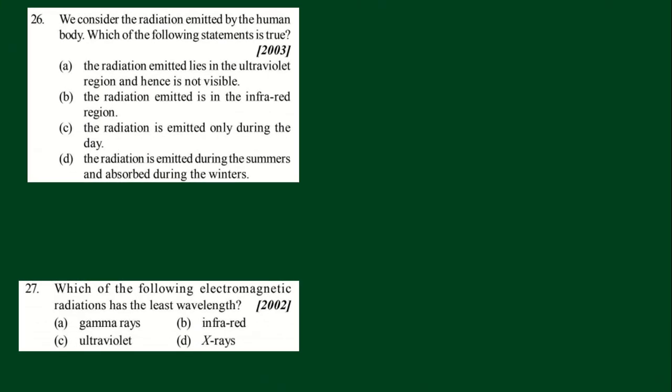We can move with question number 26. We consider the radiation emitted by the human body. Which of the following statement is true? That is a very important one. The radiation emitted lies in the ultraviolet region, or the radiation emitted is in the infrared region, or it's emitted only during the day, or emitted during summers and absorbed during winters.